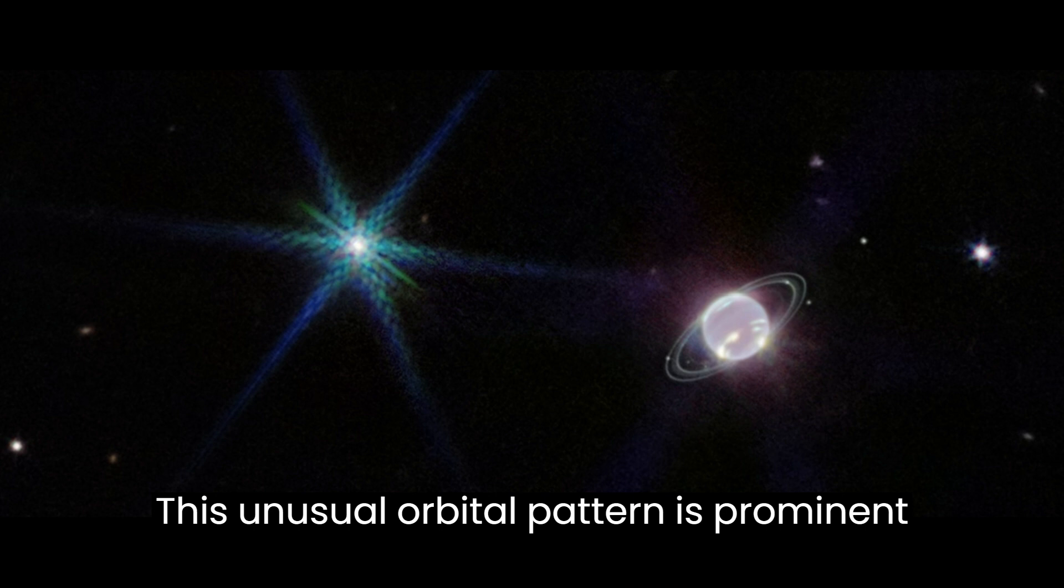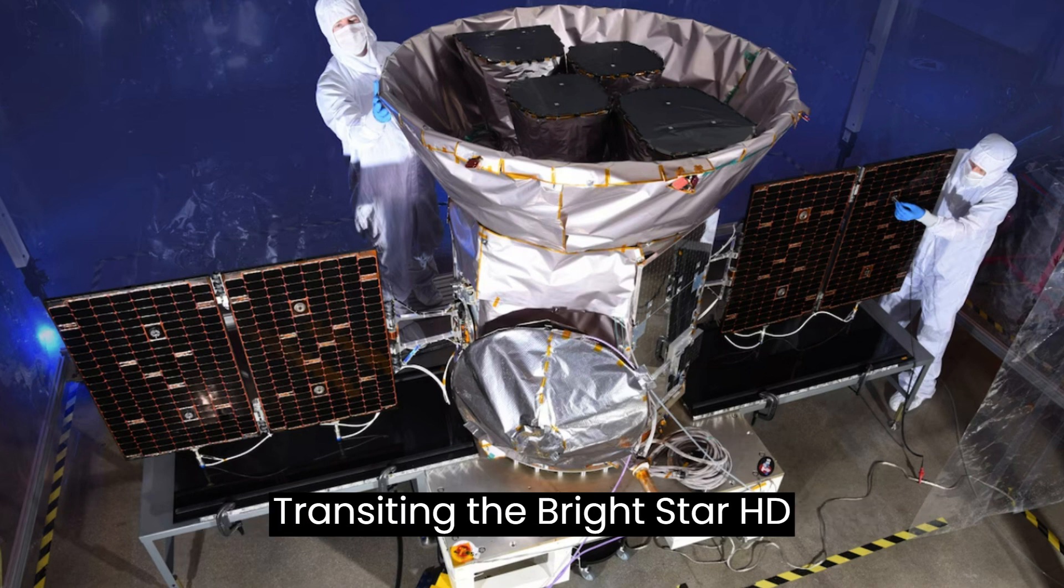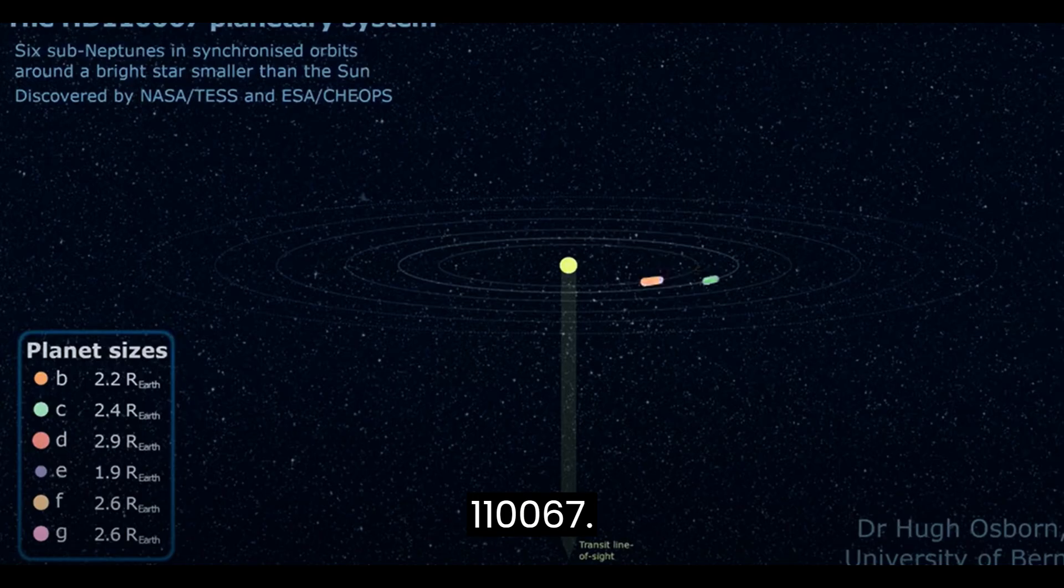This unusual orbital pattern is prominent in the grabby title of the new paper, a resonant sextuplet of sub-Neptunes transiting the bright star HD 110067.